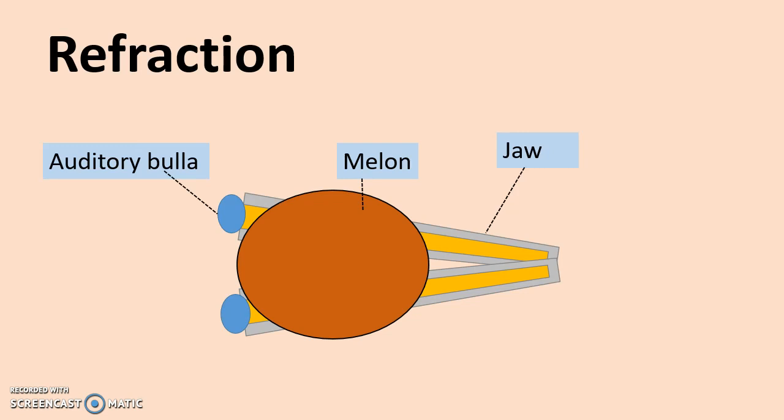Now the melon has a role in producing the sound. Now what happens here is behind the melon, we have these two things called the phonic lips, sometimes called the monkey lips. Now basically, if you think of a dolphin, it has lungs just like a human. And when it goes to breathe, the air from its lungs gets pushed up through the back of its head to its blow hole that is about here above the phonic lips.